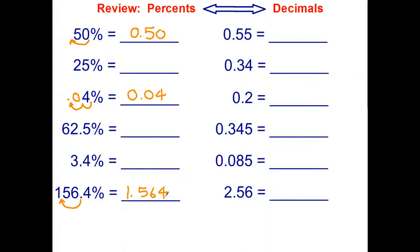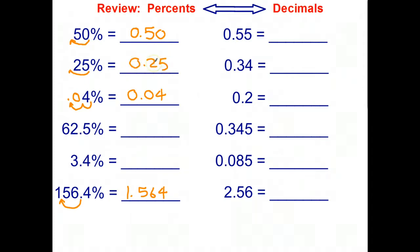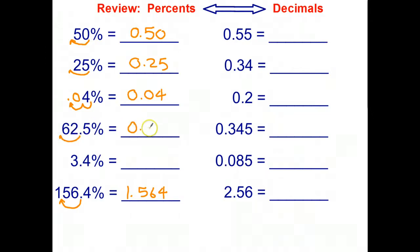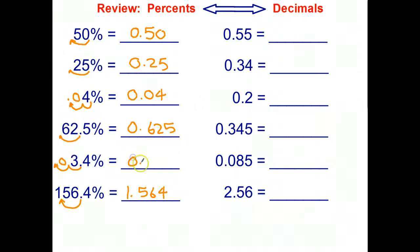Welcome back. Let's quickly go through the answers. So 25 percent — the decimal point moves back two places — 0.25. 62.5 percent — same thing, we move the decimal point to the left two places — 0.625. And 3.4 percent — we move it two places, so we need a zero to hold one place — 0.034.